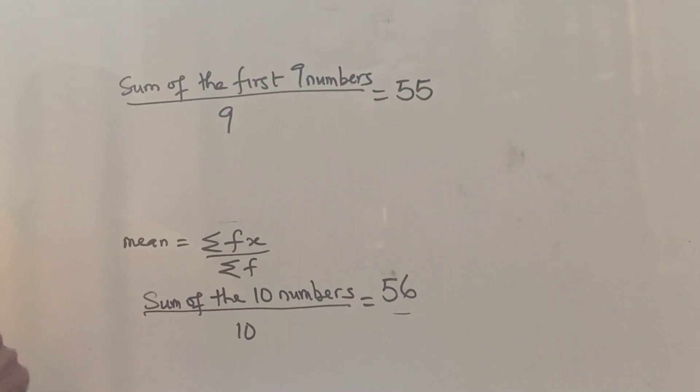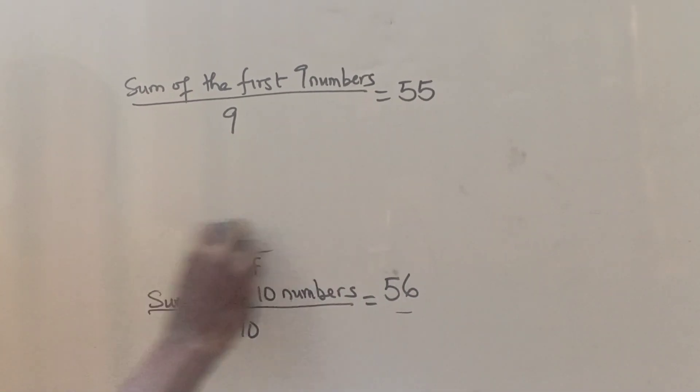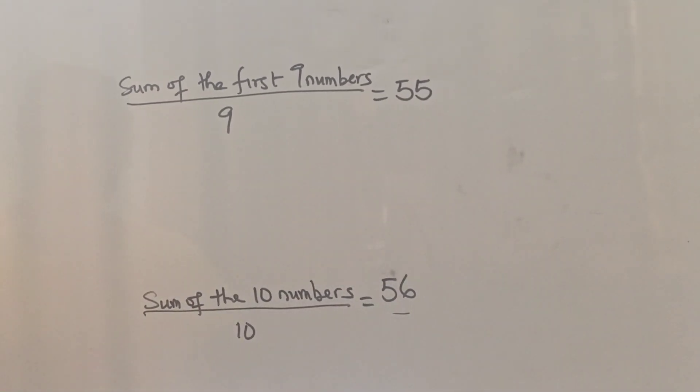So from this, we have two things here. We have the mean of the first nine numbers divided by 9, which is this. We have the mean of the first 10 numbers, which is 56, divided by 10.